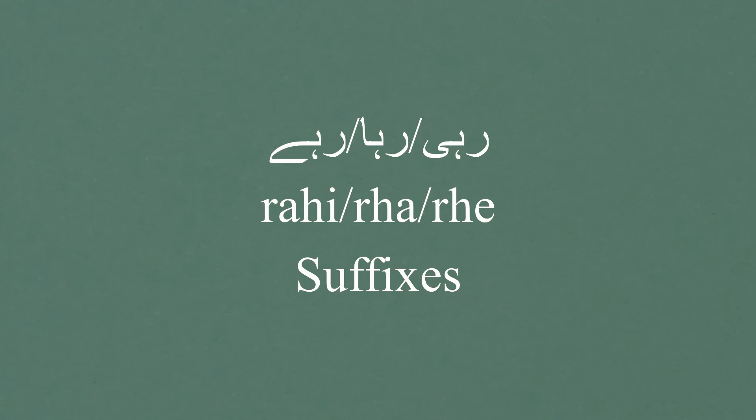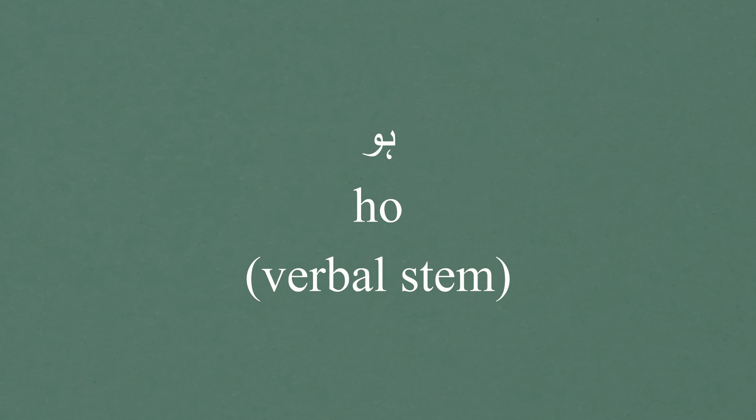The suffixes for present continuous are 'rahi' for female, 'raha' for men, and 'rahe' — those are the progressive suffixes. There are always three suffixes unless you are using the past simple tense, which has four. 'Ho' is our verbal stem. We put 'rahi' with 'ho' to get 'ho rahi': 'Main ho rahi hoon'.